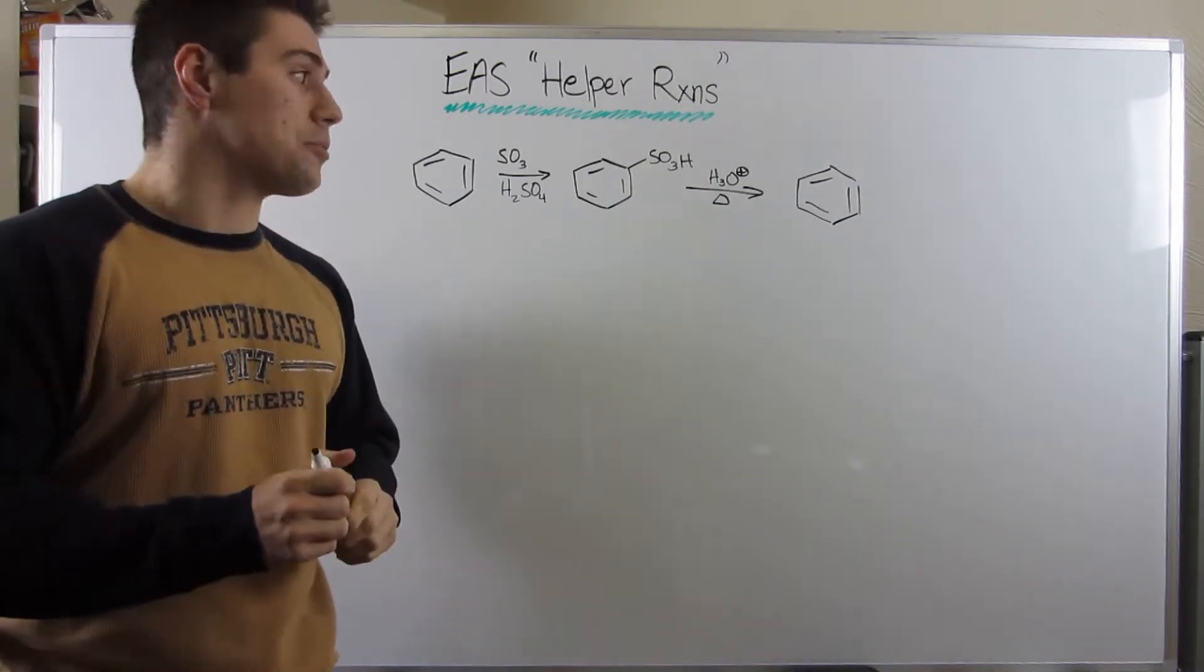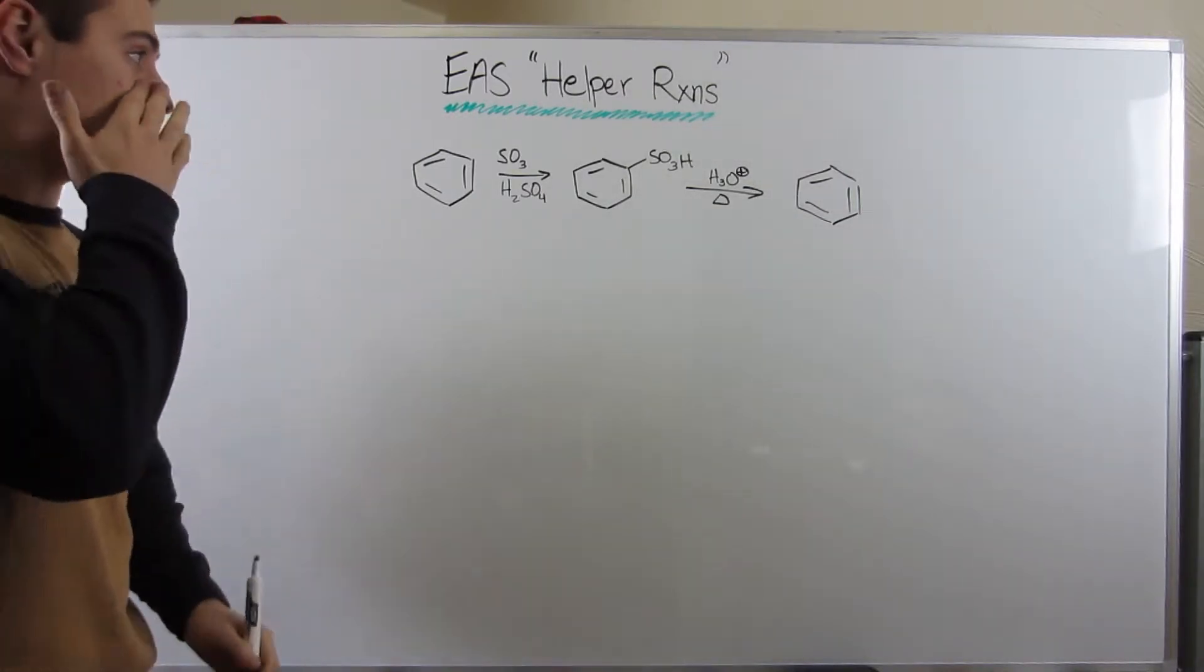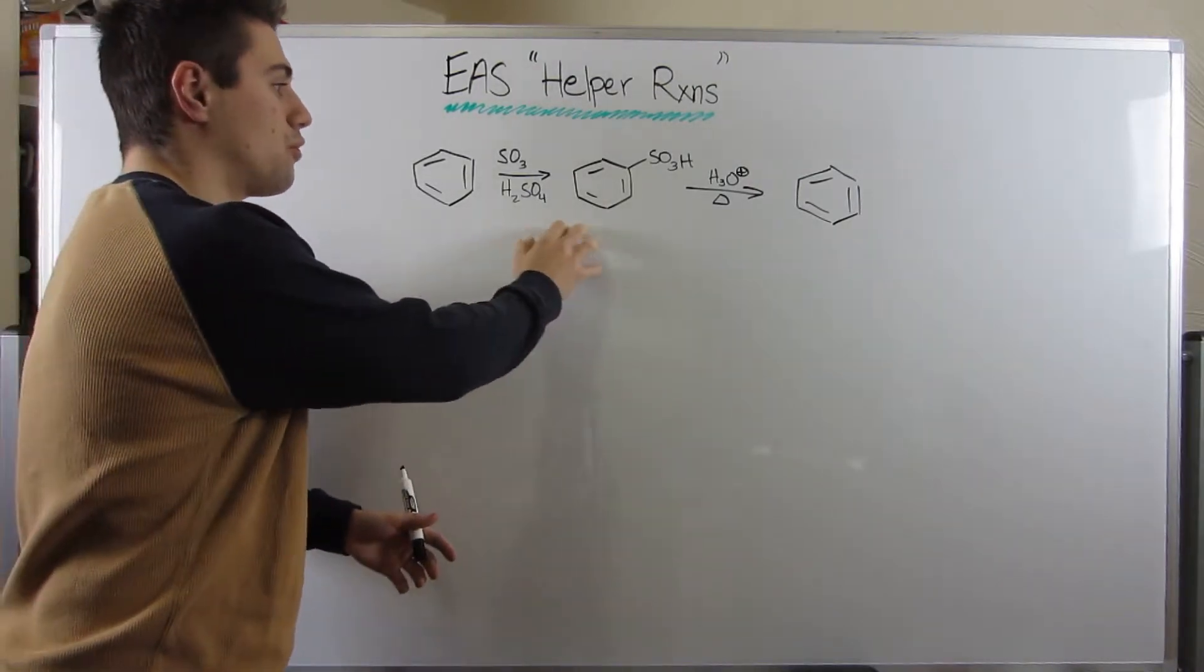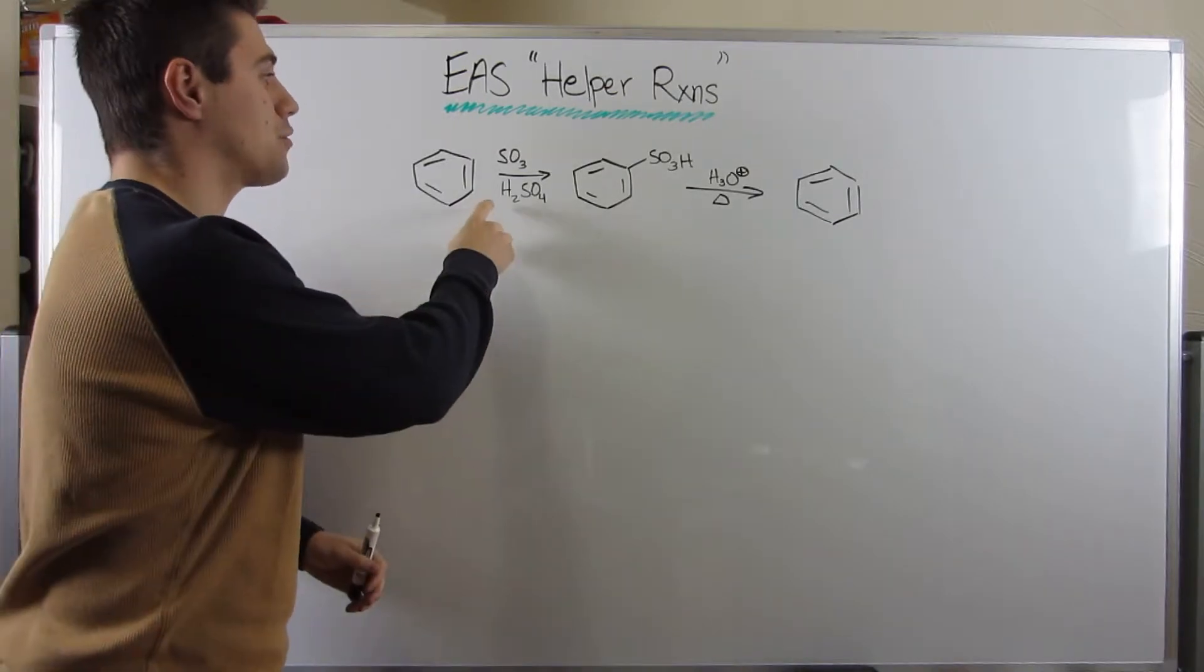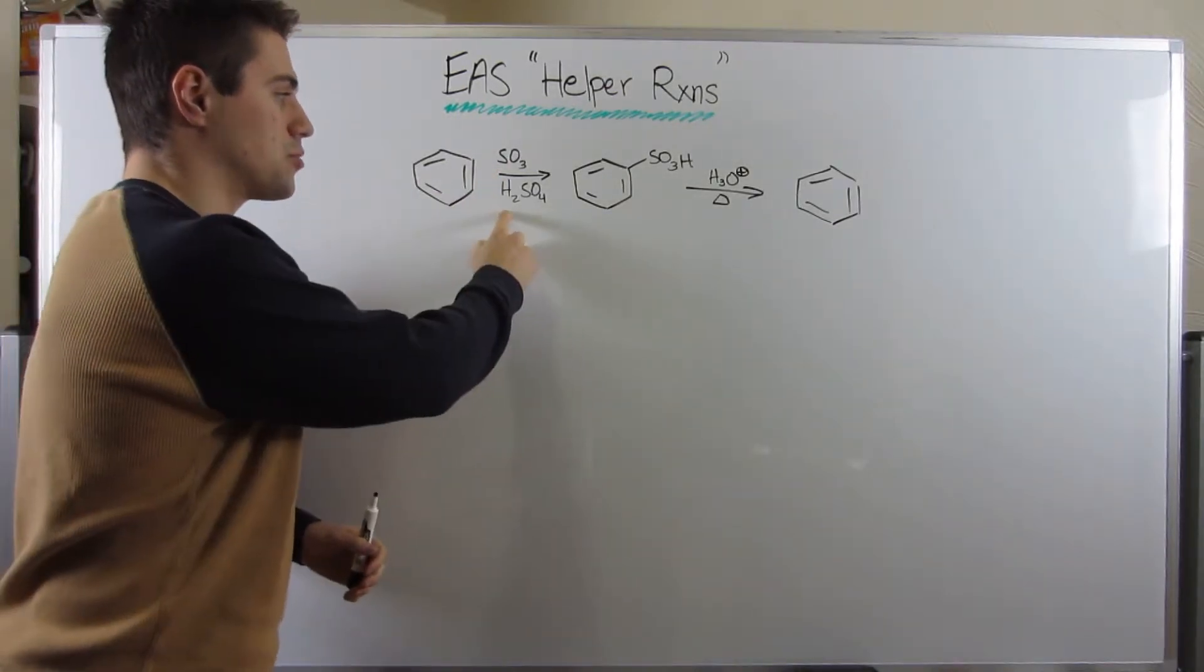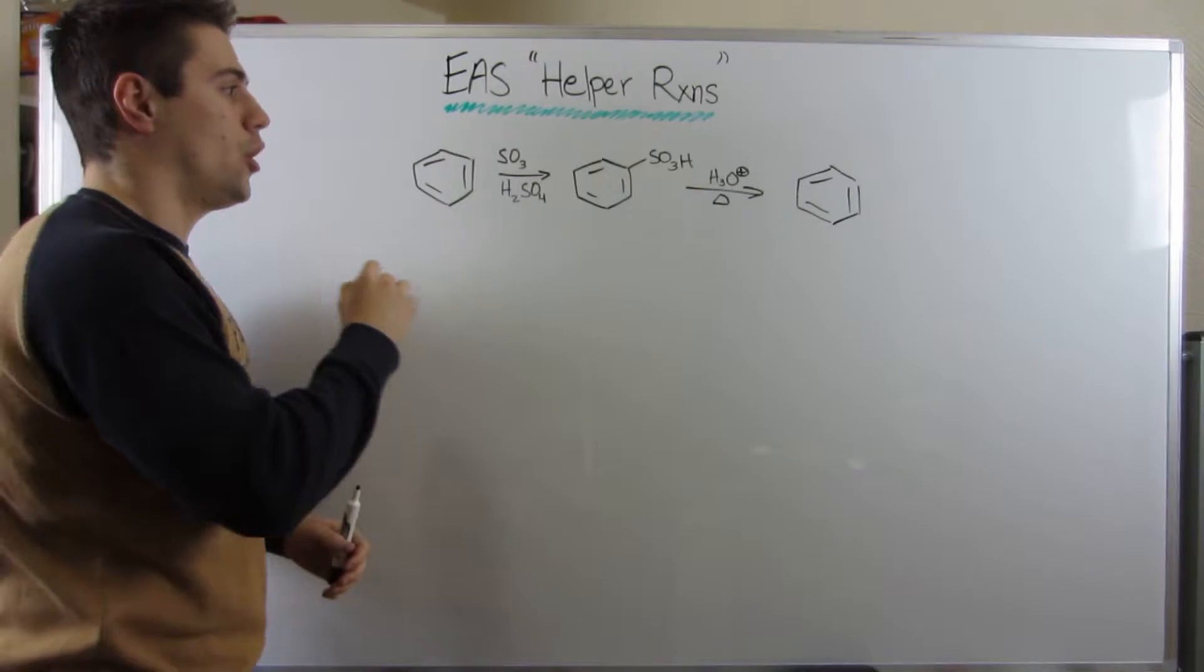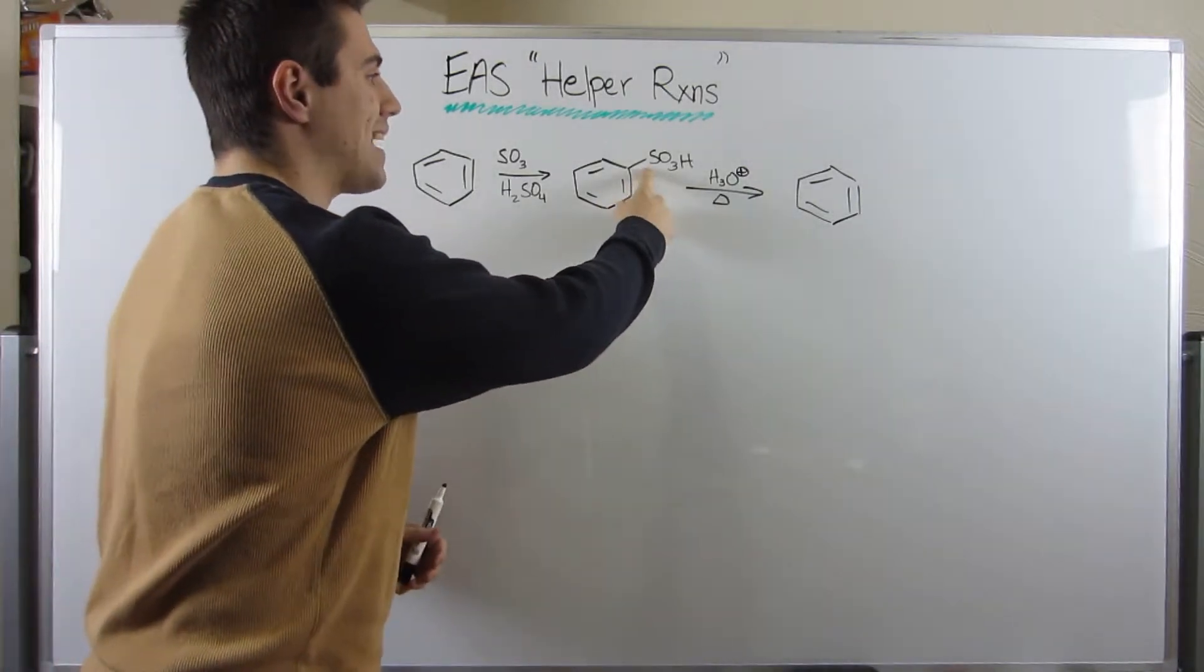No better place in my opinion to start off than a piggyback reaction to our sulfonation reaction. Remember, we said if we threw in some sulfur trioxide and some sulfuric acid with a benzene ring, we're going to stick on this sulfonyl group, this SO3H.